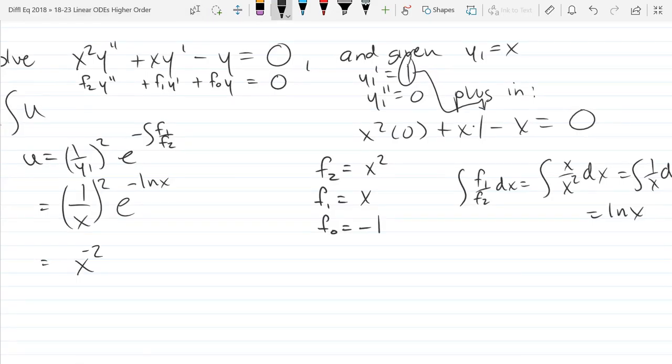1 over y1, we said was x. So this is 1 over x squared. E to the negative ln x. It's x negative 2. E to the negative ln x is e to the ln. How do I deal with that negative sign? X to the negative 1. E to the ln cancels. We got x negative 2, x negative 1. That's 1 over x cubed. That's our function u right there.